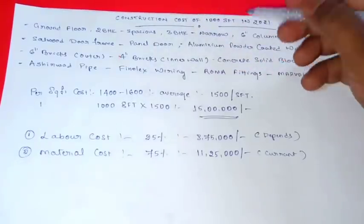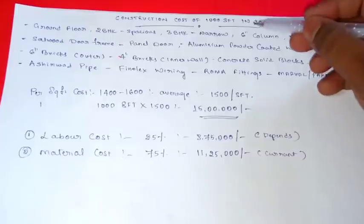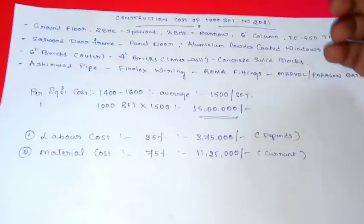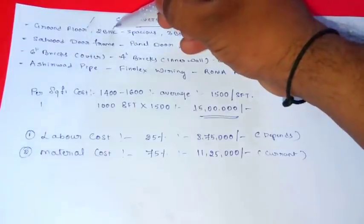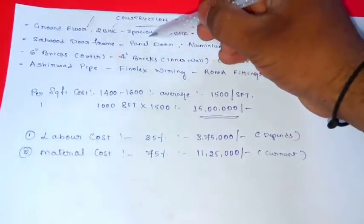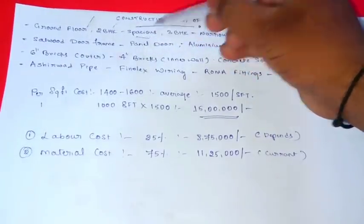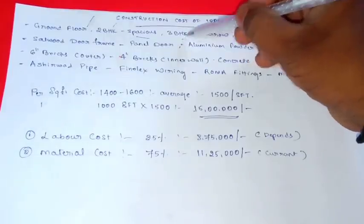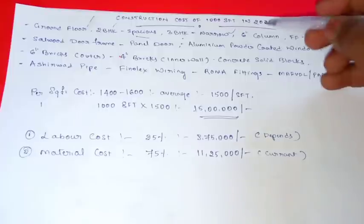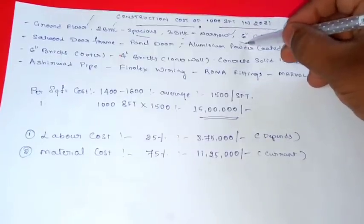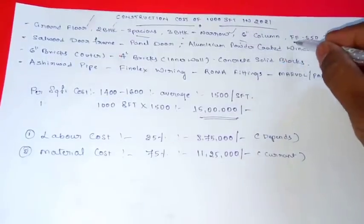Construction cost for 1000 square feet in 2021. So here we have this as ground floor 2BHK, you can use 3BHK but it is very narrow. Column is 6 inches, this is a column and the TMT.